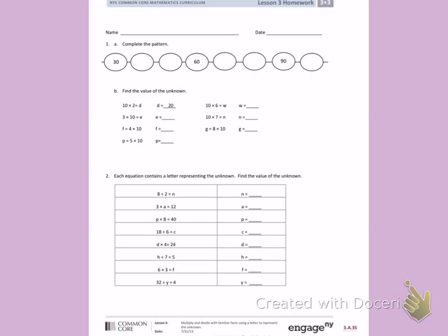Number 1. A. Complete the pattern. When I look at the pattern, I notice 30, 60, and 90. In those numbers, they all have in common that they end in zeros.